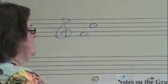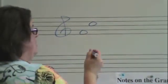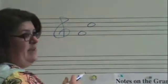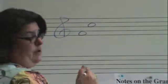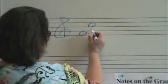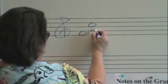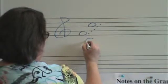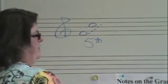To count an interval, count the bottom note as one, and then count every line and space until you reach the top note. One, two, three, four, five. This interval is a fifth.